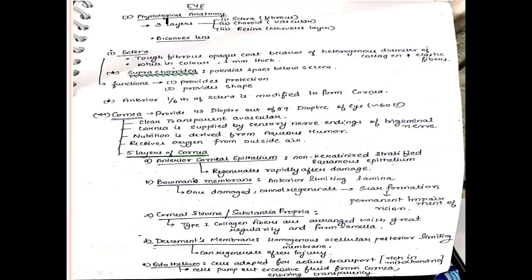To summarize the theory: the eyeball has three layers — the sclera (fibrous), the choroid (vascular), and the retina (nervous layer) — plus a biconvex lens. The sclera is a fibrous opaque coat because of the heterogeneous diameter of collagen and elastic fibers; it is white in color and about 1 mm thick. There is a potential space between the sclera and choroid called the suprachoroidal space. Functions of the sclera include providing protection and shape to the eyeball; its anterior one-sixth is modified to form the cornea.